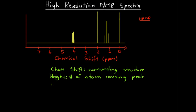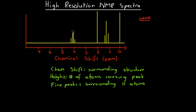However, in high-resolution HNMR we have a third thing that we can analyze. We can look at the number of fine peaks or peak splits. What these tell us is they tell us about the surrounding hydrogen atoms. Rather than having one peak here, one peak here, and one peak here, these peaks have been split — this peak here has been split into four and this peak here has been split into three. This is the high-resolution spectra of ethyl ethanoate, the same compound we looked at in the low-resolution NMR spectra video.